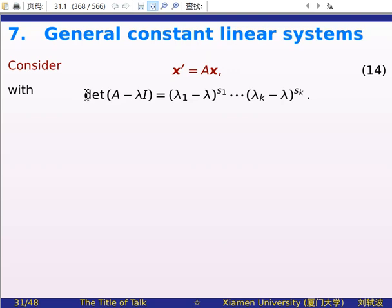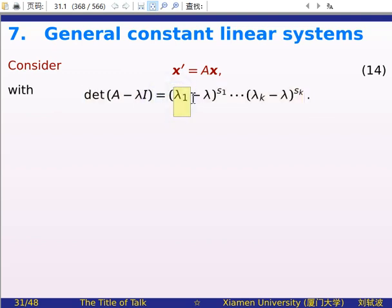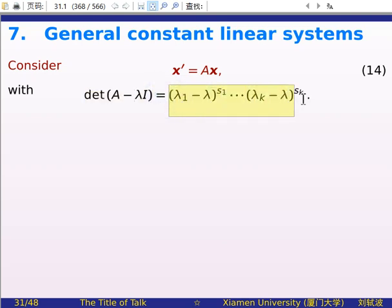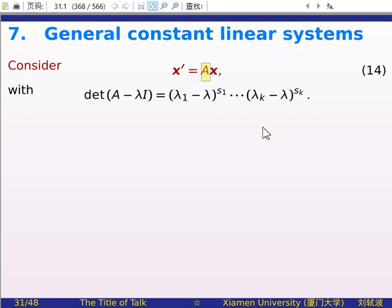The characteristic polynomial may have multiple roots. Suppose the distinct eigenvalues of matrix A are lambda_1 through lambda_k, where lambda_1 has algebraic multiplicity s_1 and lambda_k has algebraic multiplicity s_k. Therefore the polynomial can be factored into the product of k terms. In this case, A might have fewer than n linearly independent eigenvectors, so it could not be diagonalized, and the previous method will not work for this system.